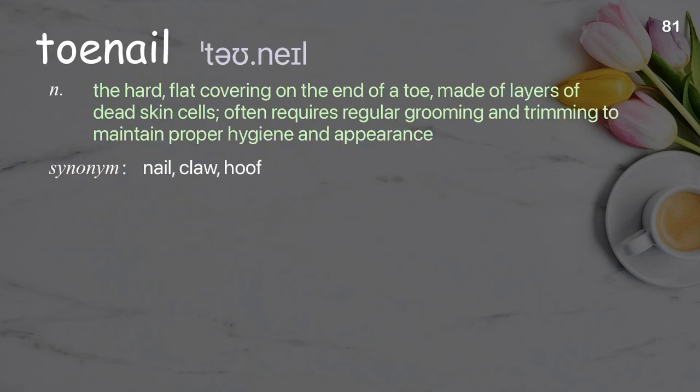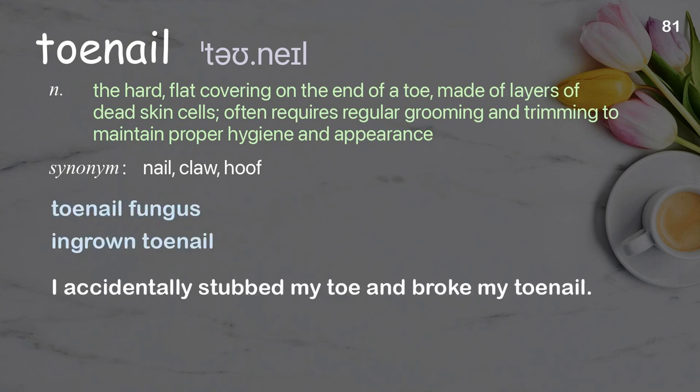Toenail: The hard, flat covering on the end of a toe, made of layers of dead skin cells; often requires regular grooming and trimming to maintain proper hygiene and appearance. Examples: Toenail fungus. Ingrown toenail. I accidentally stubbed my toe and broke my toenail.